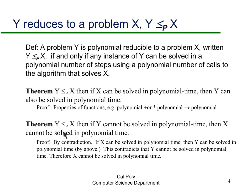The contrapositive theorem: if Y cannot be solved in polynomial time, then X cannot be solved in polynomial time. The proof is by contradiction — if X could be solved in polynomial time, then Y could also be solved in polynomial time, which would contradict the assumption that Y cannot be solved in polynomial time. Therefore X cannot be solved in polynomial time.